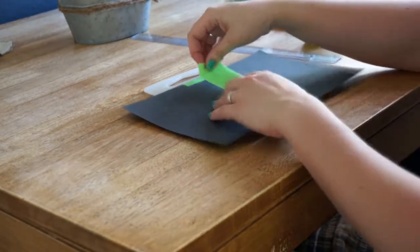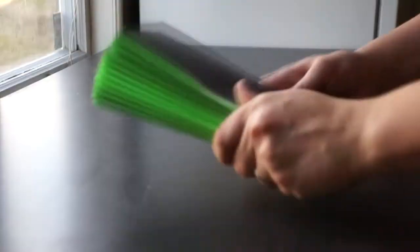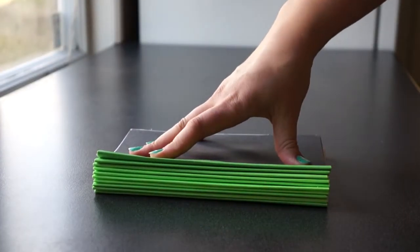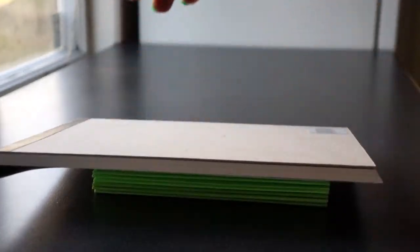Since I don't have a fancy book press, I simply just put a crockpot on top of the signatures for a while so the signatures could become more flat again, since the duct tape added quite a bit of bulk.